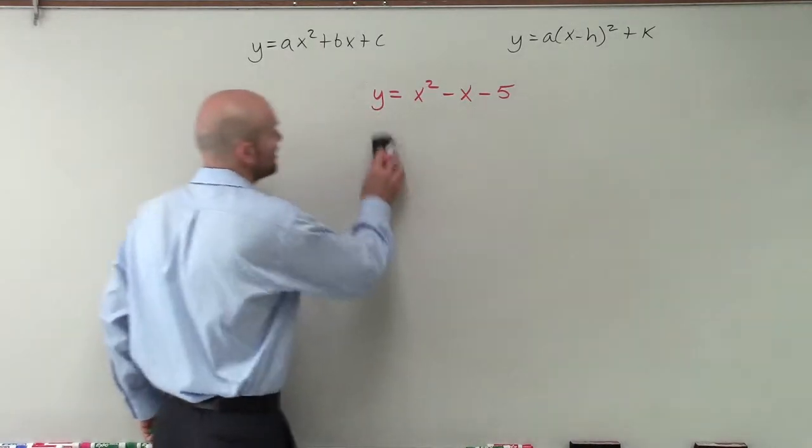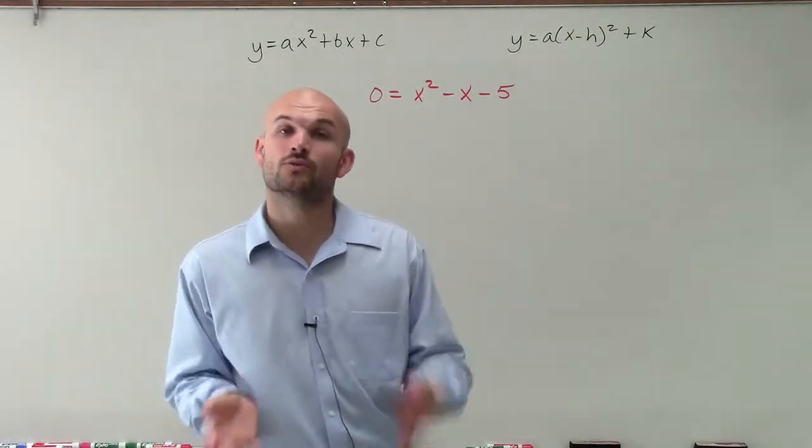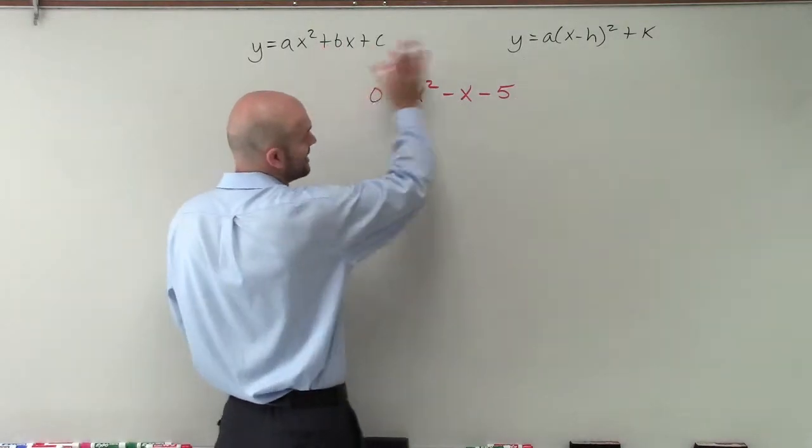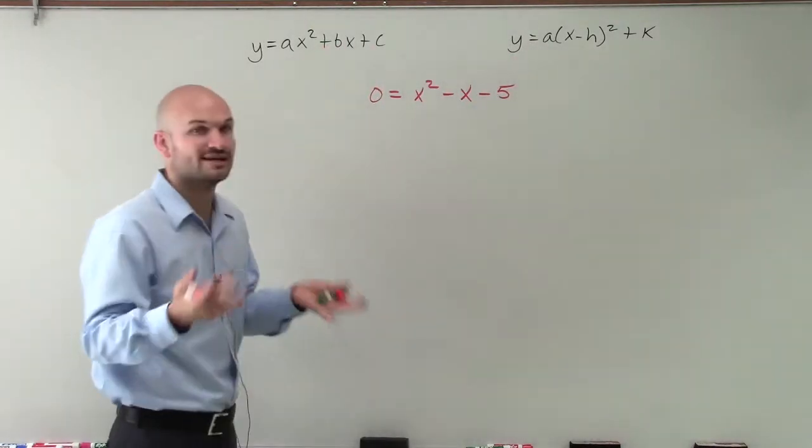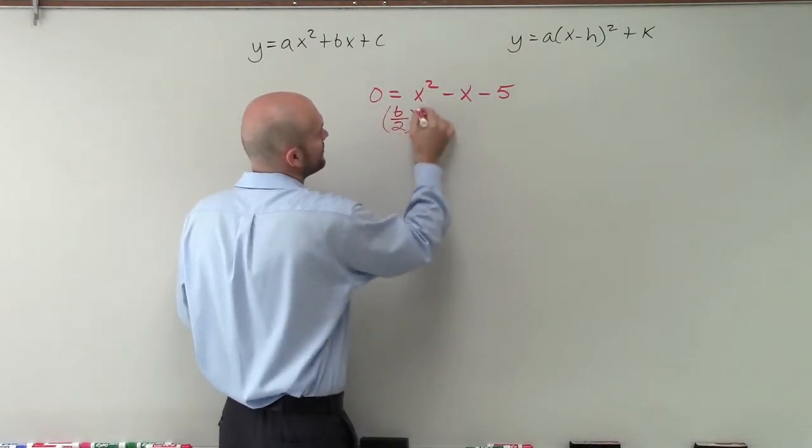So the first thing we're going to solve by completing the square. If you remember, we're going to want to find the values of x that are going to make this equation true when our output value is equal to 0. And then we want to make sure we convert it from our standard to our vertex form. So therefore, I need to follow the process of taking my b, dividing it by 2, and squaring it.